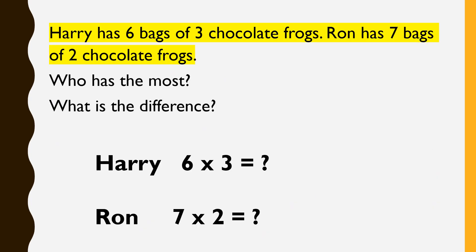Harry has 6 bags of 3 chocolate frogs. Ron has 7 bags of 2 chocolate frogs. Who has the most? What is the difference? Before we find out who has the most and what is the difference, we need to find out how many they each have first. For Harry, we need to find out what 6 lots of 3 is, and for Ron, 7 lots of 2. You can pause the video and work out the answer.